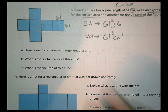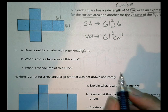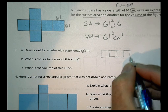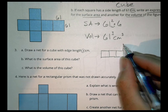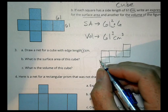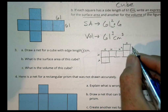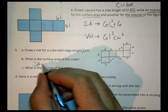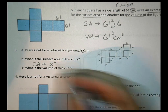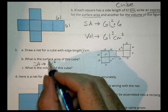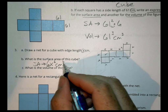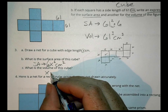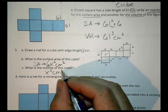Number 3: draw a net for a cube with edge length x, and find the surface area and volume. Drawing the same net with all edge lengths labeled x. Surface area is the area of one face times 6: x squared times 6, or 6x squared centimeters squared. Volume is x times x times x, which is x cubed centimeters cubed.